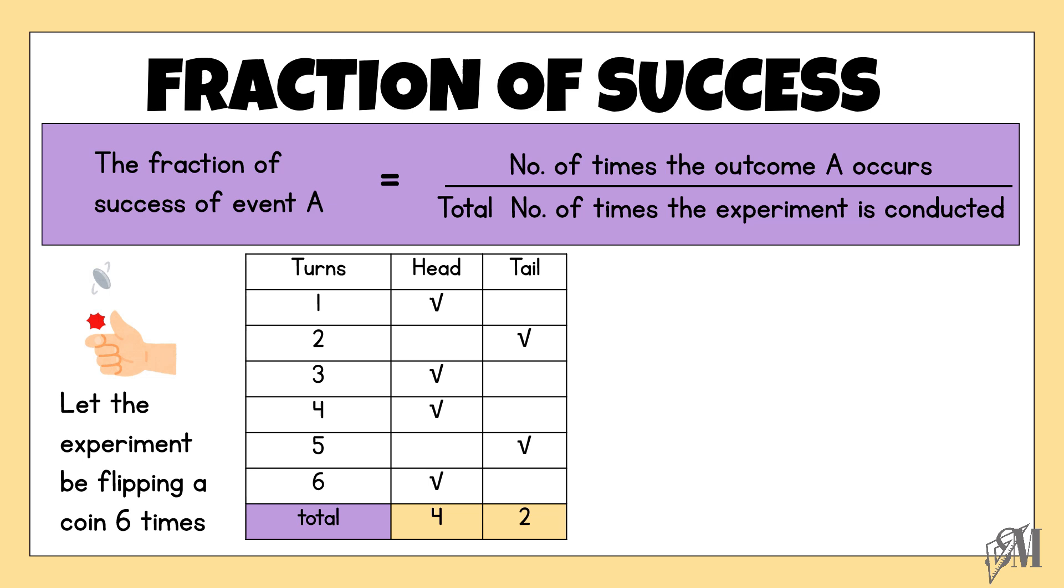Now what is the fraction of getting a head? The fraction of success of getting a head is equal to 4 over 6. Here 4 is the number of times we got the head up, 6 is the total number of flips. And the fraction of success of getting a tail is equal to 2 over 6. So I hope the fraction of success is very clear through this example.